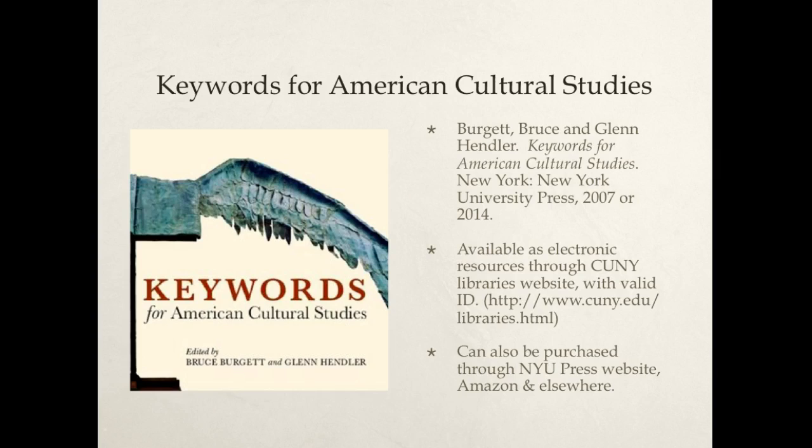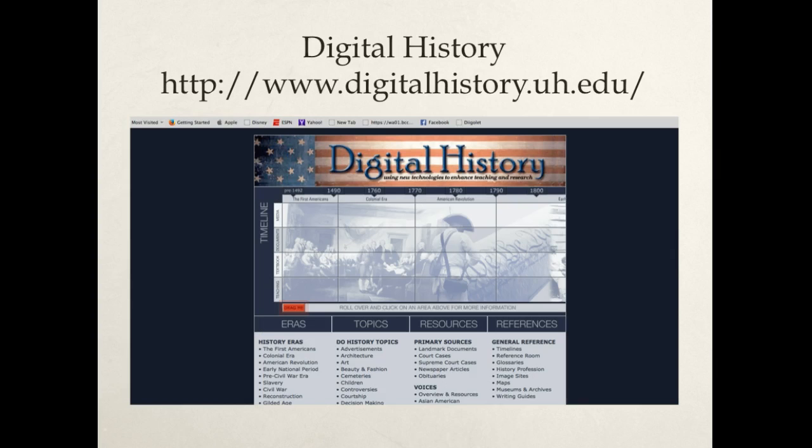We will be using the text Keywords for American Cultural Studies. An electronic version can be accessed through the CUNY Library's website if you have a valid CUNY ID. There are two editions, one published in 2007 and one in 2014, but you can read the essays in either edition. If you decide you want a physical text, you can purchase it through the NYU Press website, Amazon, or other booksellers. For historical context, we will also refer to the free online American History textbook found at the Digital History website.